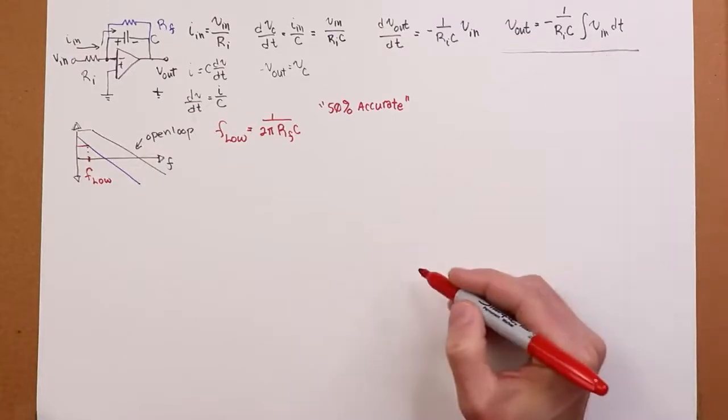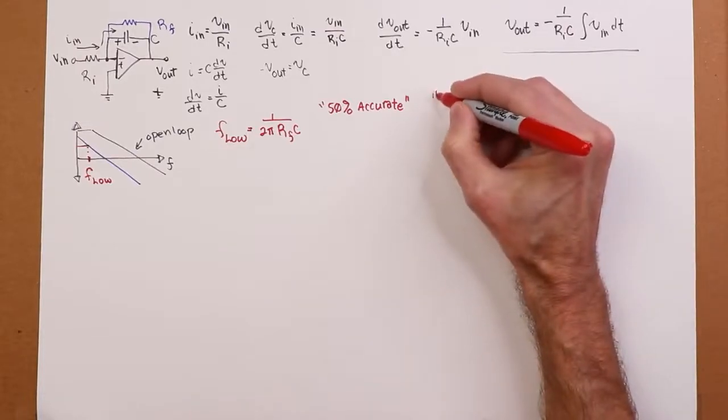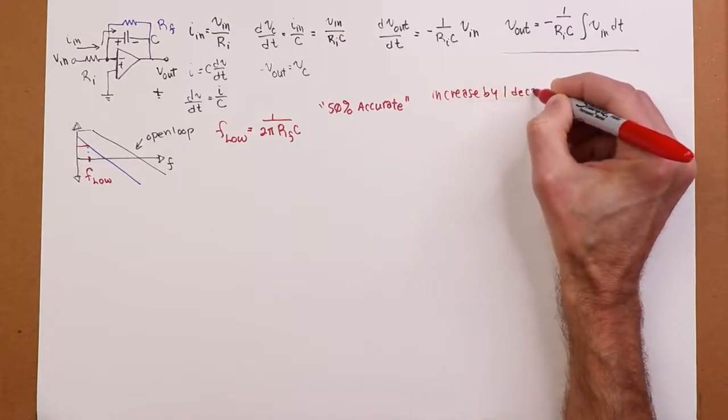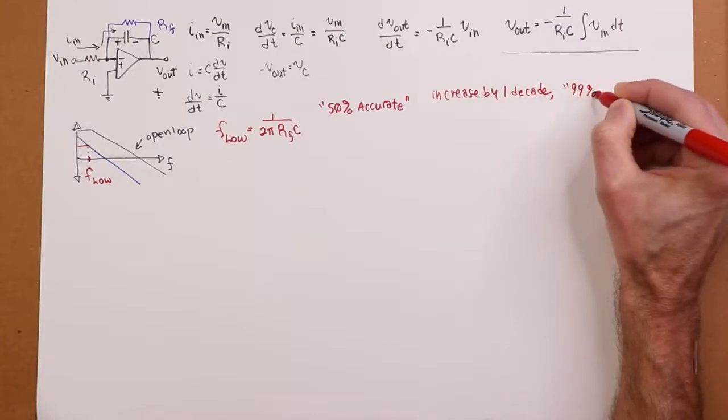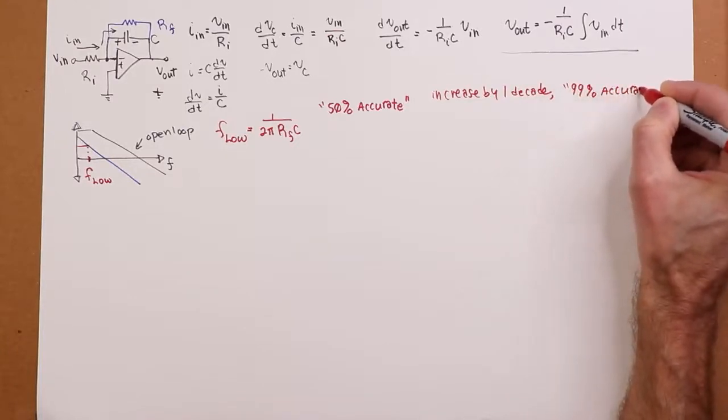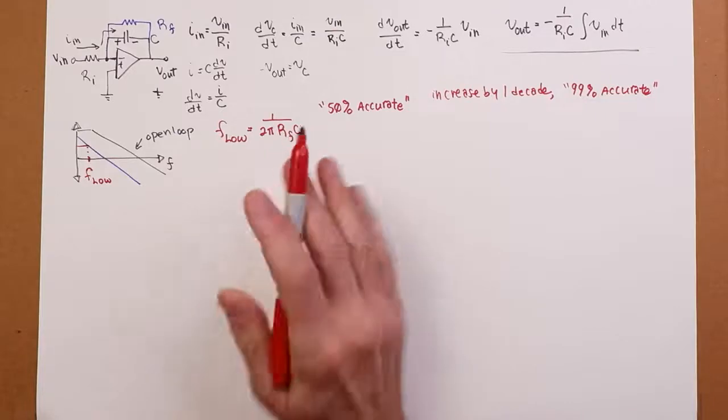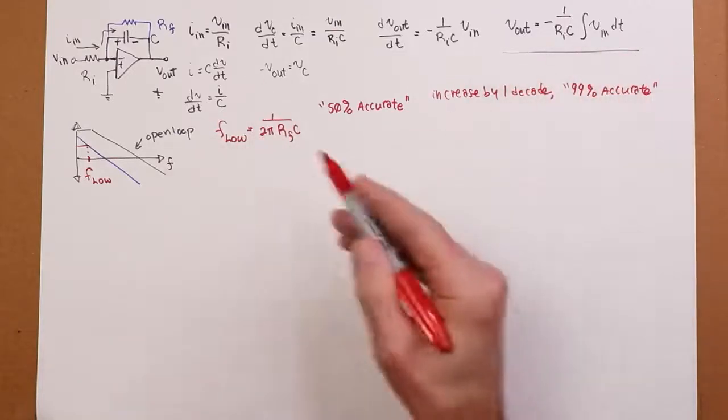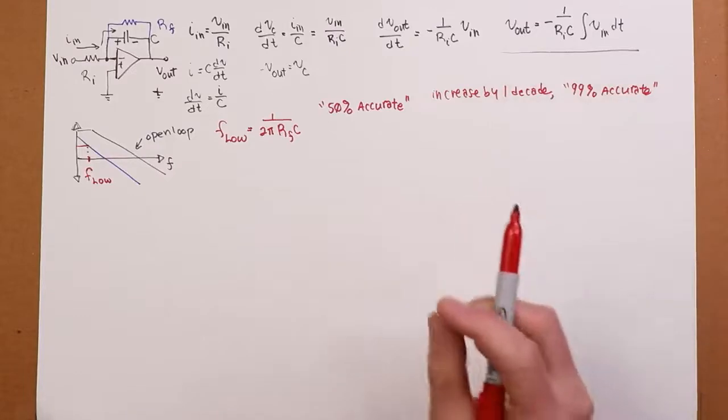But generally speaking, we want to operate above F low. If the input frequency, if your Vin input frequency, we're just talking about a simple sine wave here, if you're up by a decade, then you're looking at like 99% accurate. So if F low was 100 hertz, you wouldn't expect super accurate amplitude and phase from this equation if you had 100 hertz input, but if you had a 1 kilohertz input, the accuracy of this equation will be spot on. It'd be really nice.